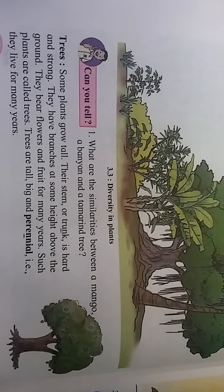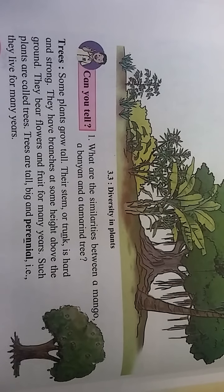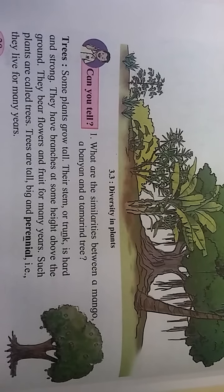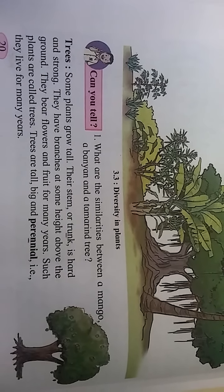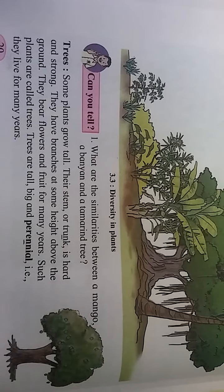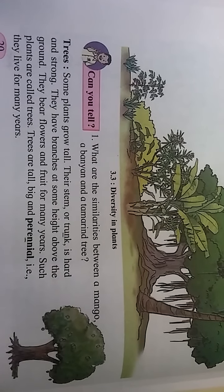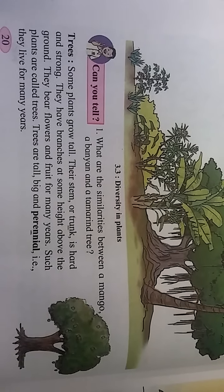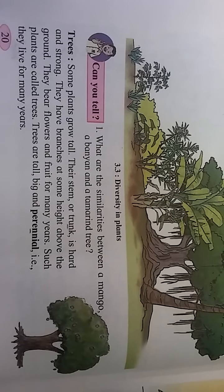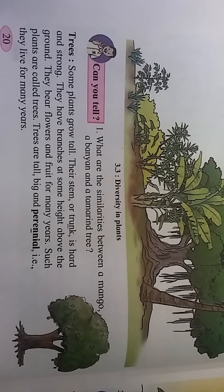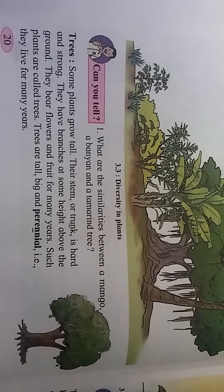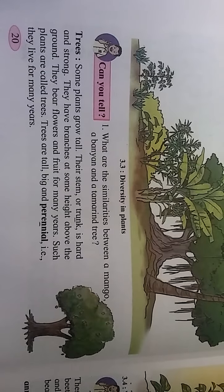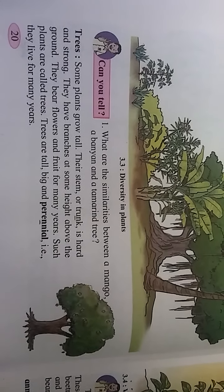What are the similarities between mango, banyan, and tamarind trees? The height — all trees are tall. Some plants grow tall; their stem or trunk is hard and strong. They have branches at some height above the ground and bear flowers and fruits for many years. Such plants are called trees — they are tall, thick, and perennial.